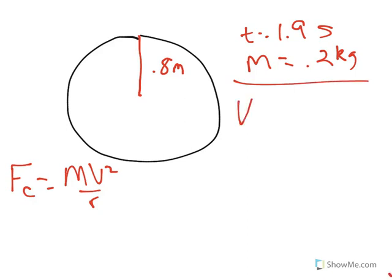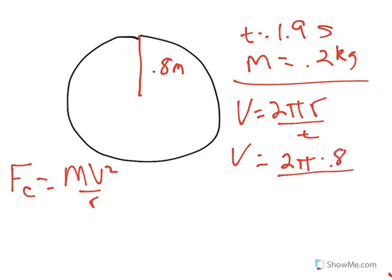Formula for v is equal to 2 pi r over t, which is convenient because I have all those things. So, we end up getting v is equal to 2 pi times 0.8 divided by t, which is 1.9. So, v is equal to 2 pi times 0.8 divided by 1.9 seconds, and we get 2.65 meters per second.